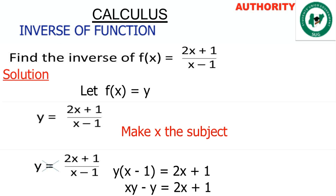Now let's open this bracket. You have y times x will give you xy, y times 1 will give you y minus y, equals 2x plus 1.